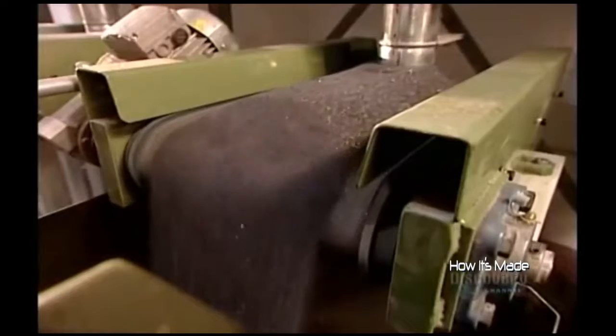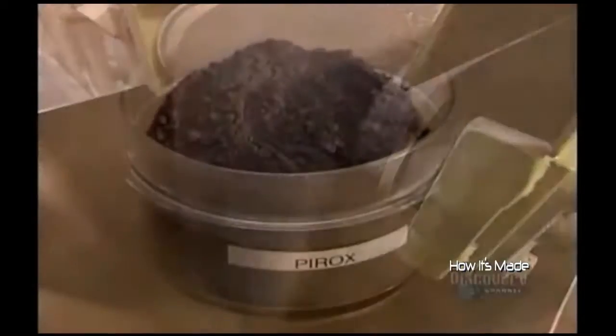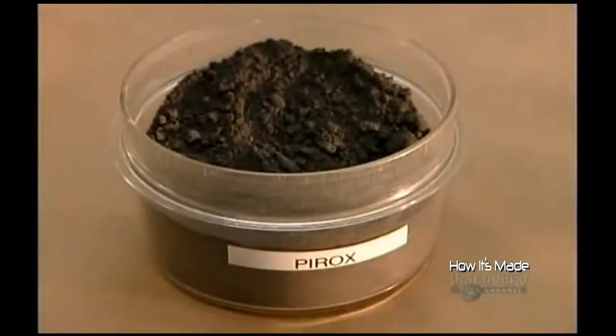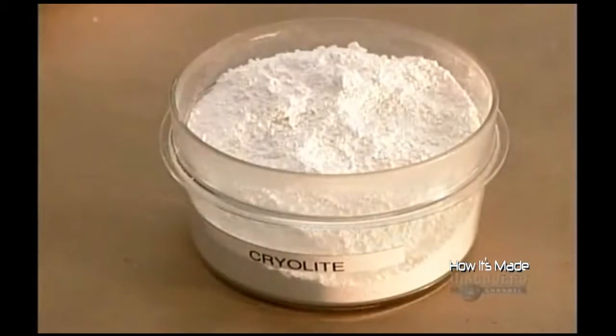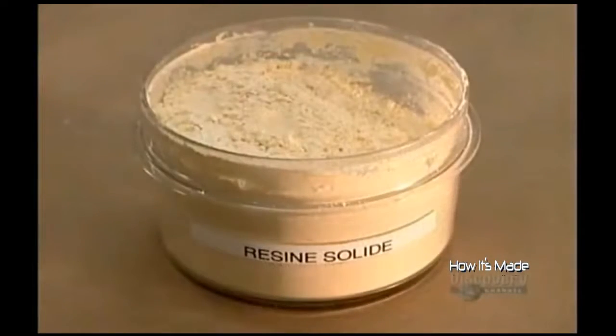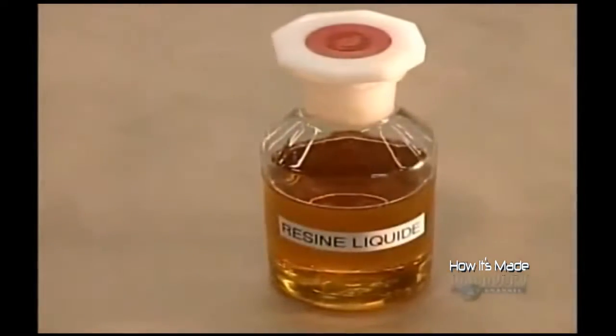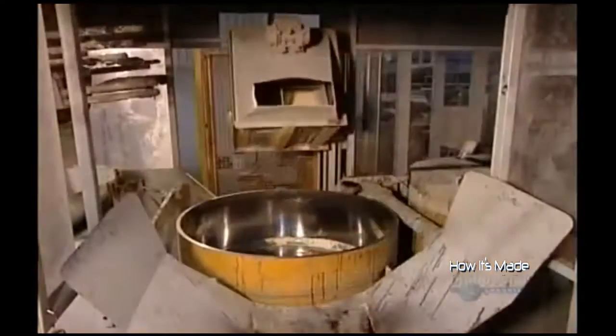Computer-programmed scales automatically weigh the various ingredients, including additives such as iron oxide for wheels that cut or grind iron, and the mineral cryolite, which lubricates the abrasives. Powdered and liquid resins bond all these ingredients together.